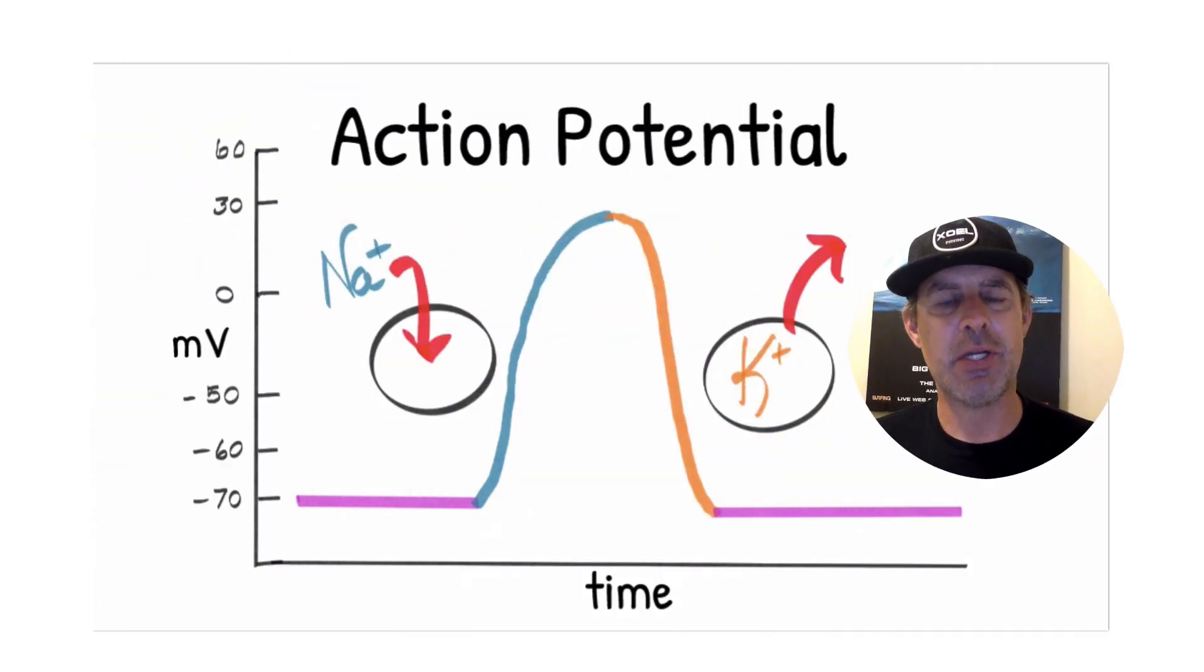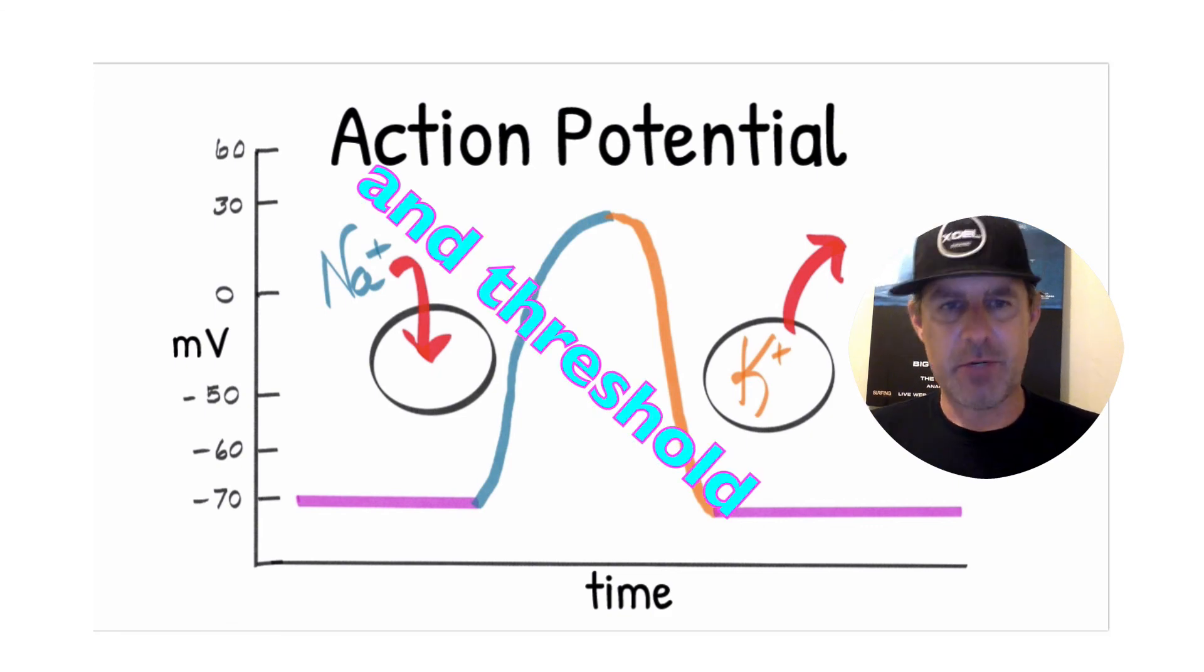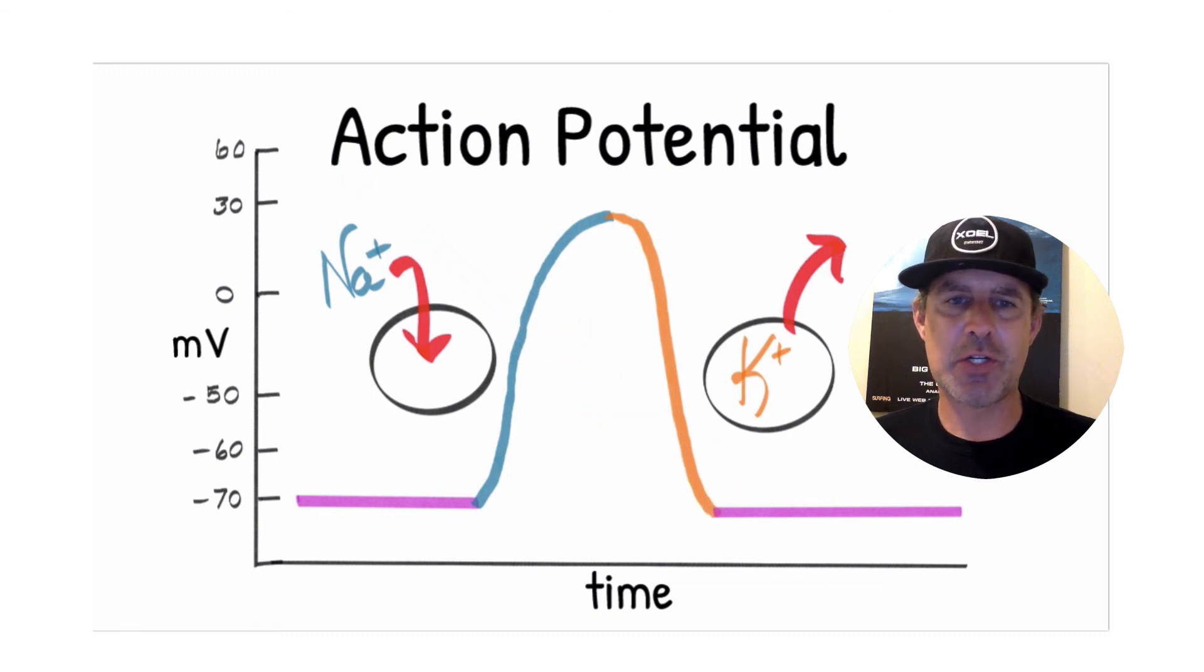And that is an action potential. An action potential is a depolarization and repolarization event. There's some additional characteristics that we may see in action potentials, such as a hyperpolarization event. But for now, we're just going to stick with the basics of a depolarization and repolarization event that occurs in excitable cells.